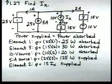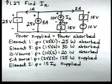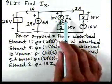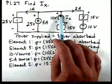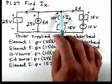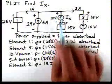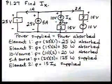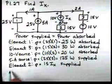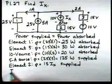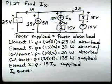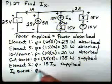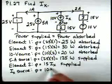With Ix leaving the plus terminal, that's the power supplied by element two. Our last element is the Ix current source — just like the 5-amp source, the current flows out of the positive terminal, so this Ix source is also supplying power. The power supplied by it is 10 times Ix.